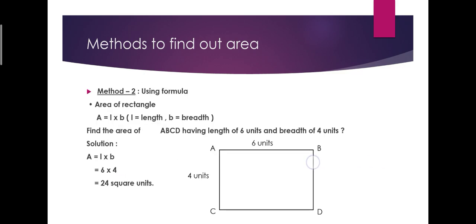Then method two by using formula. Here we have to calculate the area of rectangle. Area of rectangle: what is the formula? A is equal to L into B. L stands for length, B stands for breadth. Here the students have to find out the area of rectangle ABCD having length of six units and breadth of four units. Solution is area equals L into B, six into four, that equals to 24 square units.